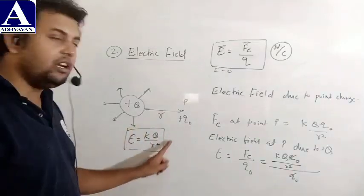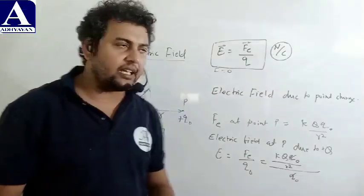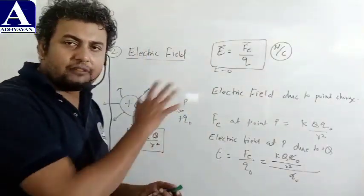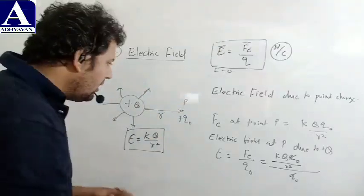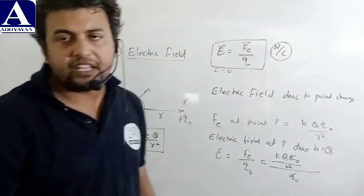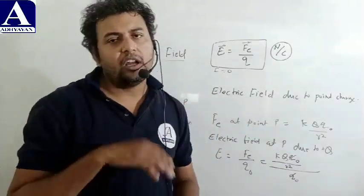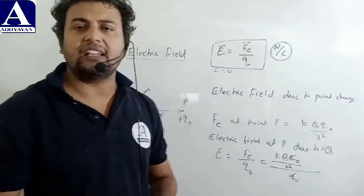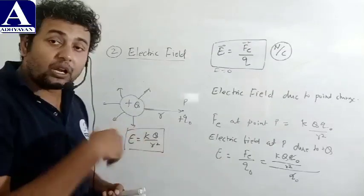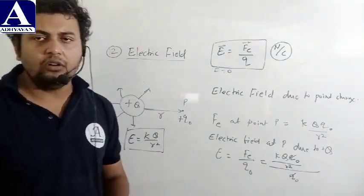This is the electric field due to point charge. So you will write the definition of electric field and explain this derivation. That's enough. In the next class we will discuss the next topic - that is electric potential, what is EMF, what is potential difference. Thank you very much.